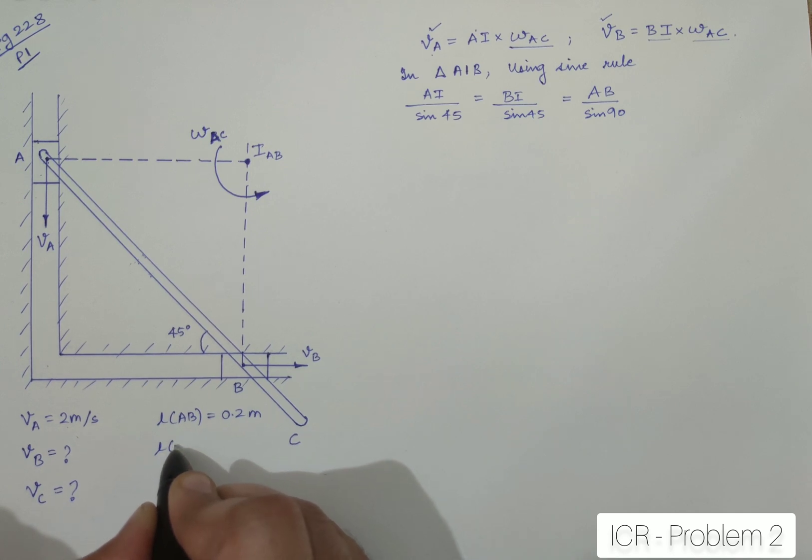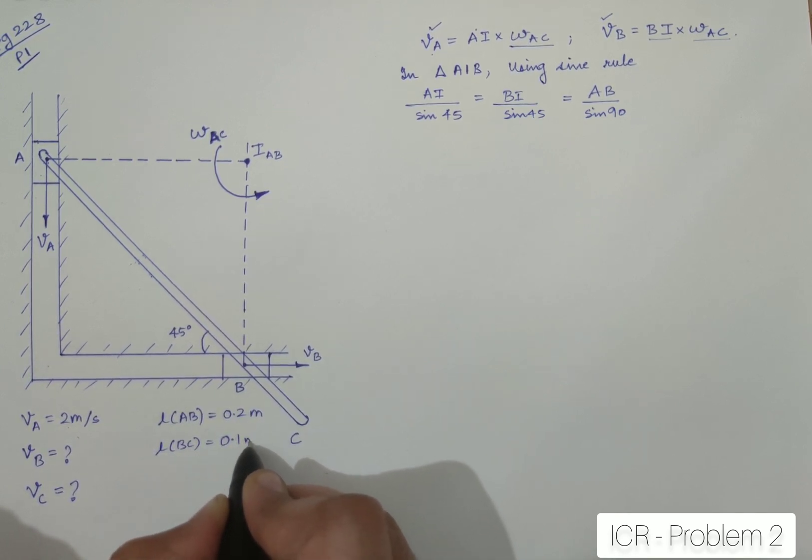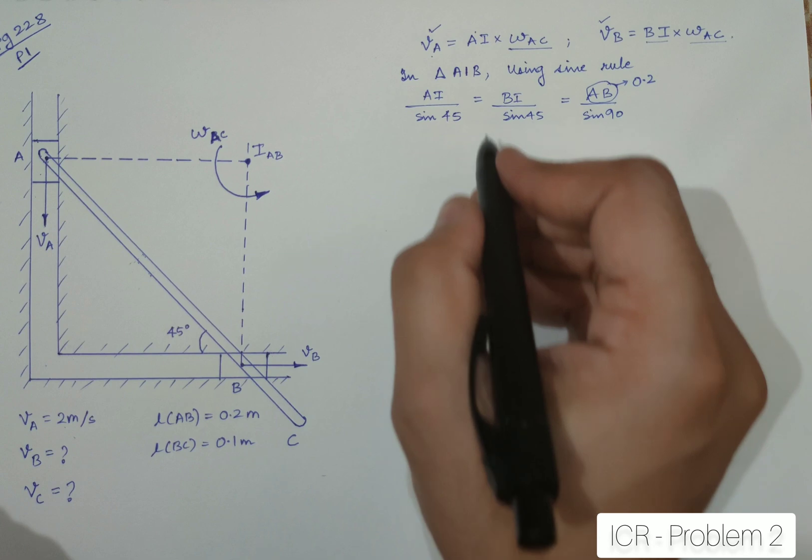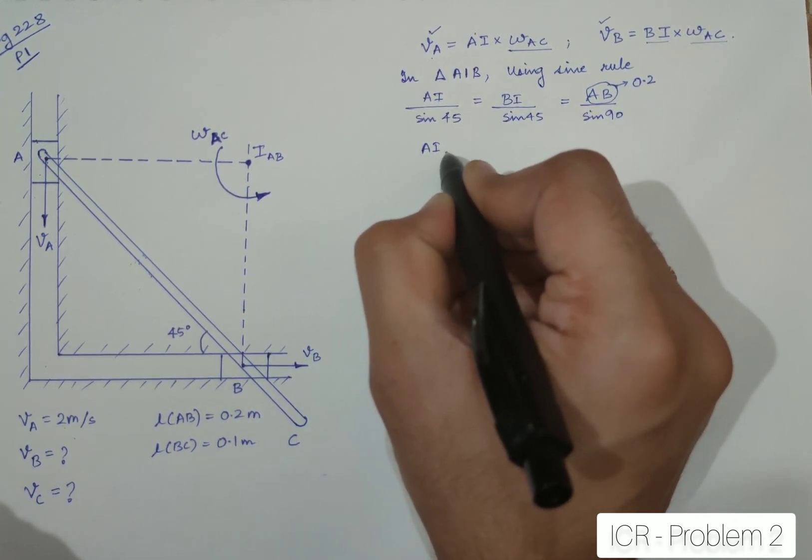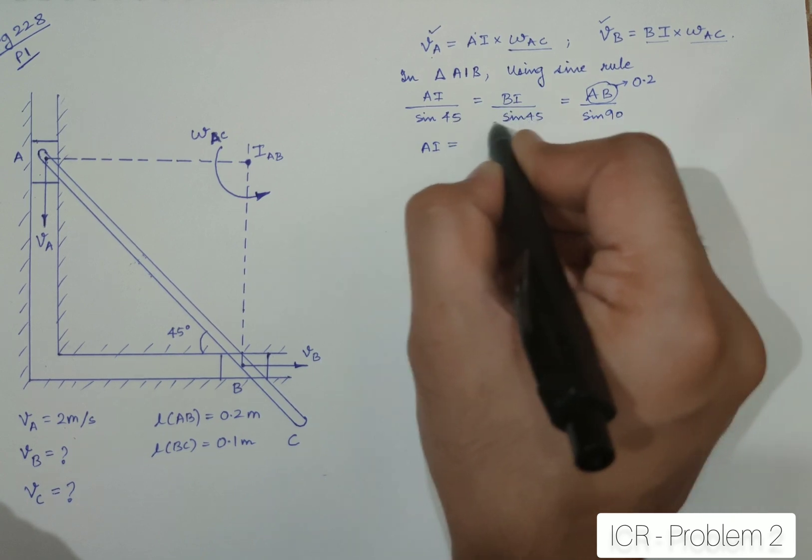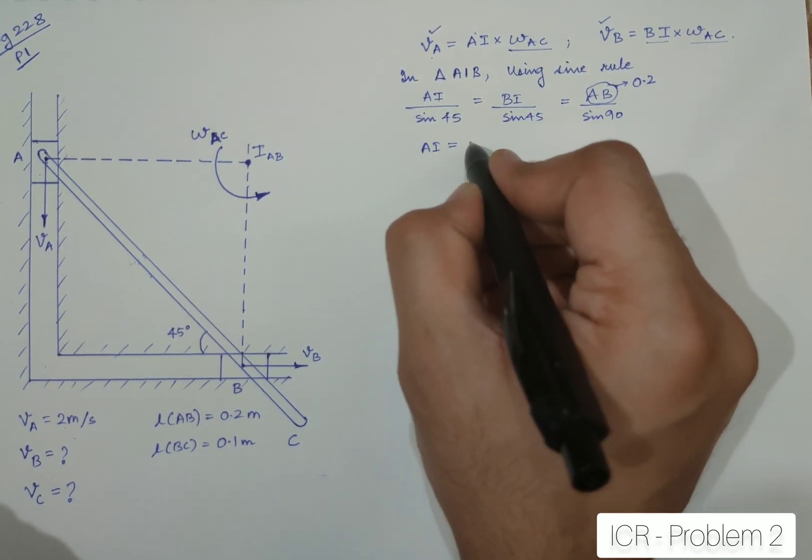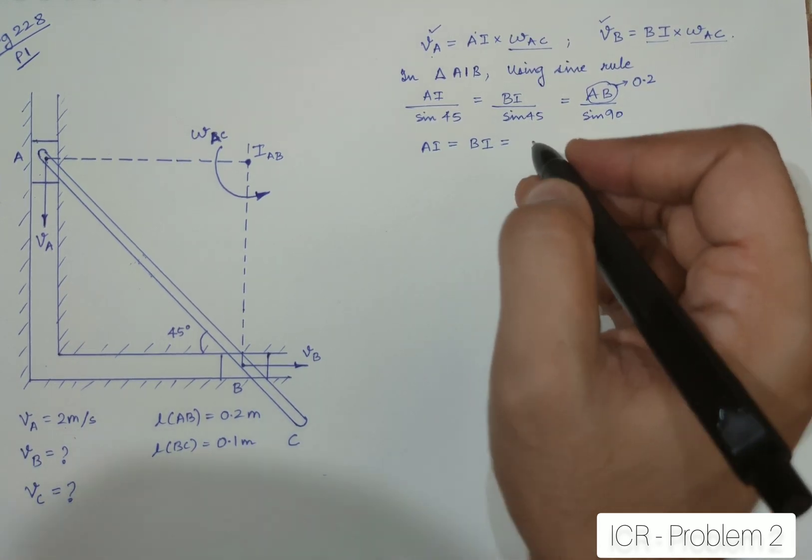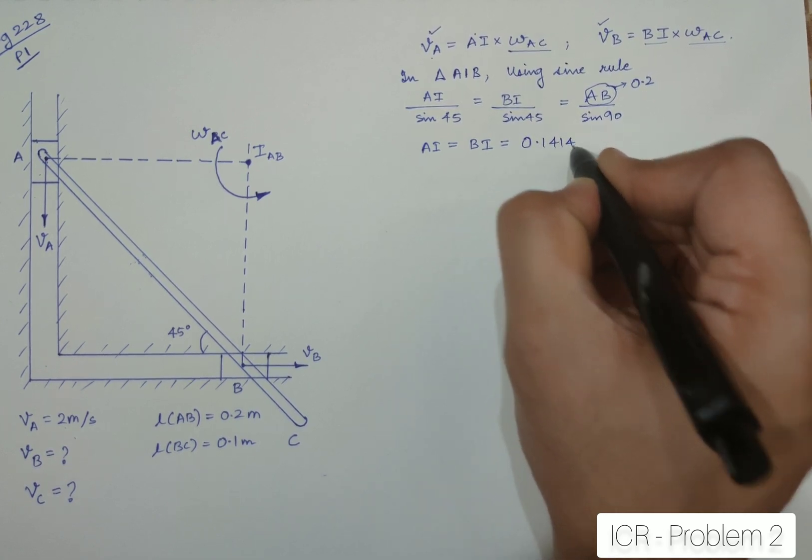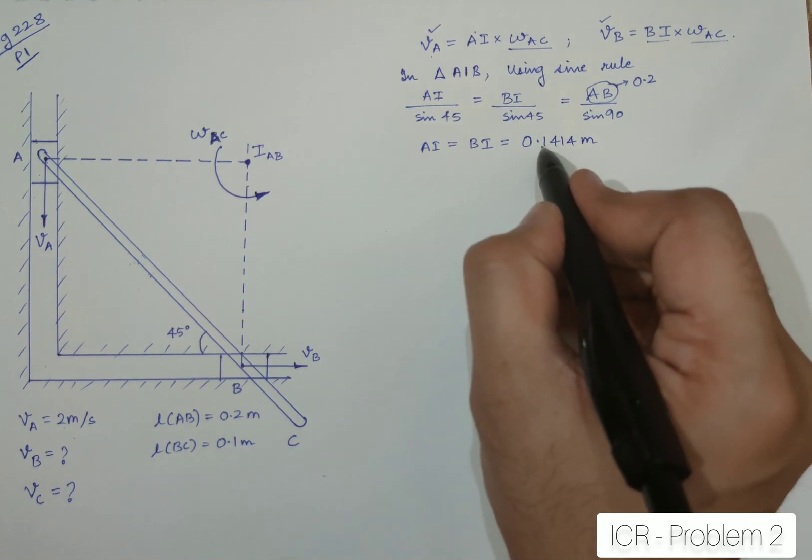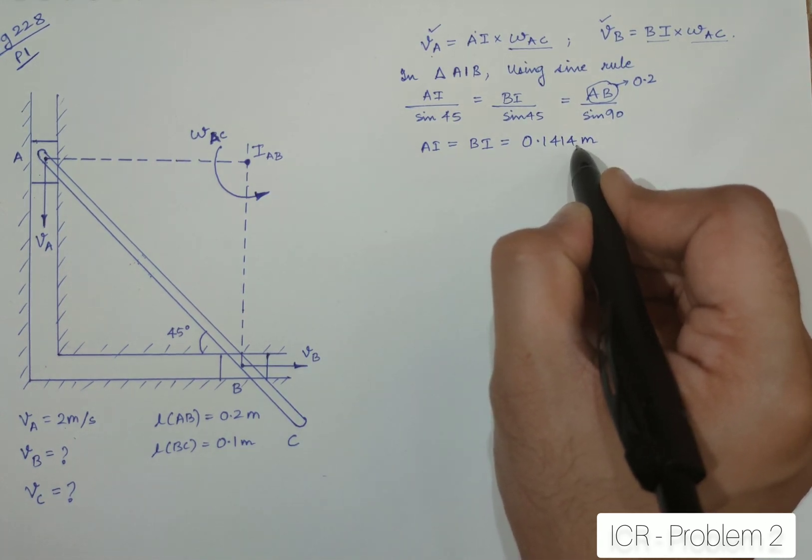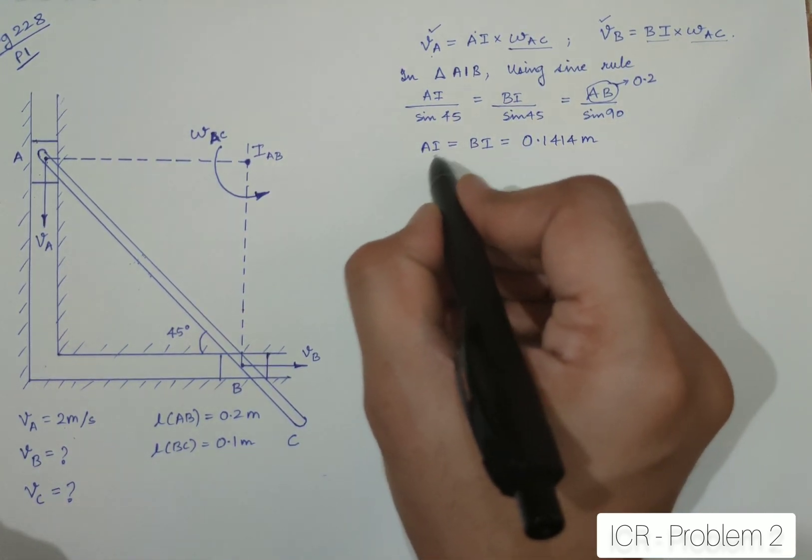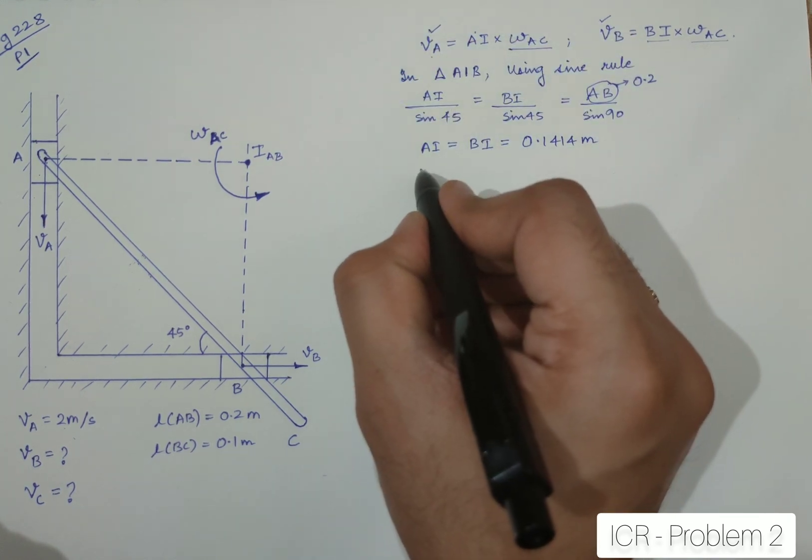So, when I substitute over here AB as 0.2, I will be able to find out AI which definitely will also be equal to BI because they are having the similar angles, which should be equal to BI, which will be equal to when you calculate, it should be coming out to be 0.1414 meters. I would suggest you to write it at least in 3 decimal points or maybe even 4 for this problem because the values are too small.